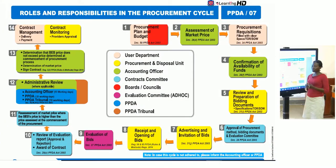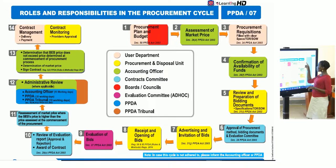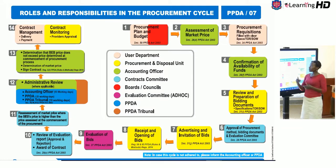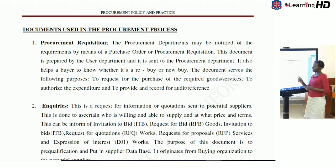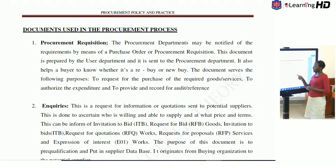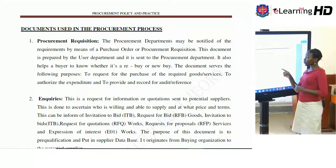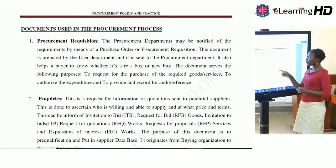Three is where we have procurement requisitions — this is where the user departments raise a requisition for items that they require. The procurement department may be notified of the requirements by means of a purchase order or procurement requisition. This document is prepared by the user department and sent to the procurement department. It also helps a buyer to know whether it is a rebuy or new buy. The document serves to request the purchase of required goods or services, to authorize the expenditure, and to provide a record for audit references.